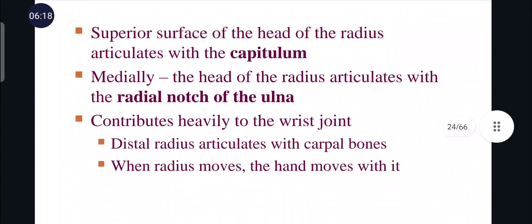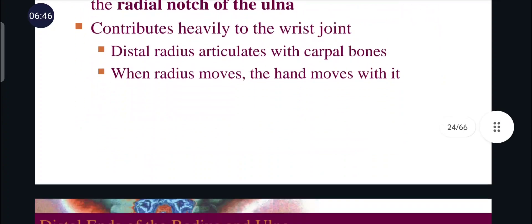The radius: the superior surface of the head of the radius articulates with the capitulum. The head of the radius is circular or radial in nature. Medially, the head of the radius articulates with the radial notch of the ulna but does not articulate with the humerus. The radius contributes heavily to the wrist joint — the distal radius articulates with the carpal bones, and when the radius moves, the hand moves along with it.